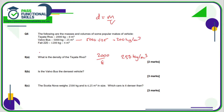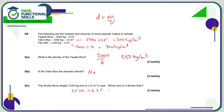The Fiat 220 is going to be 1,200 divided by 4, and that is 300 kilos per cubic metre. So is the Volvo bus the most dense vehicle? No, it's actually the least dense. The Scotia Nova weighs 2,500 kilos and is 6.25 cubic metres, so its density is 2,500 divided by 6.25, which works out as 400. So it's denser than all of them.